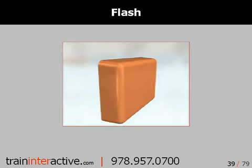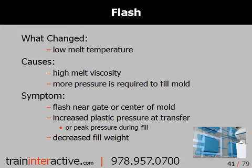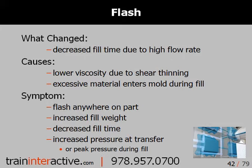First, we're going to talk about flash. When looking at a defect, we want to determine what has changed from our documented standard. If flash was a result of a high melt temperature or degraded polymer, you would most likely see a drop in plastic pressure at transfer from fill to pack, and a rise in overall part weight. If the melt temperature were low, causing flash around the runner or center of the mold, you'd see a rise in pressure at transfer and a drop in overall part weight. If the flash was due to a high injection rate, you'd see an increase in part weight and pressure at transfer, and a shortened fill time.